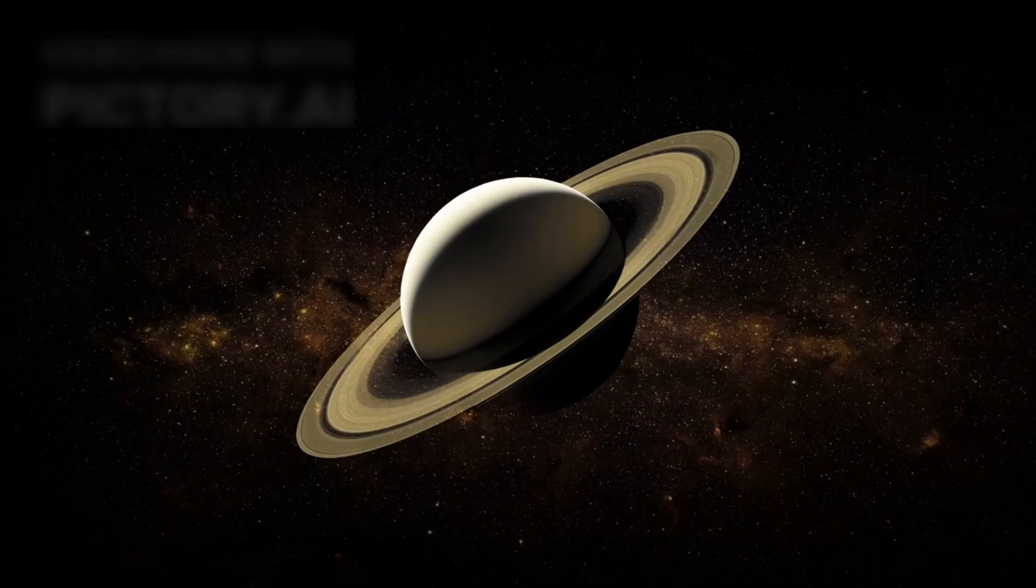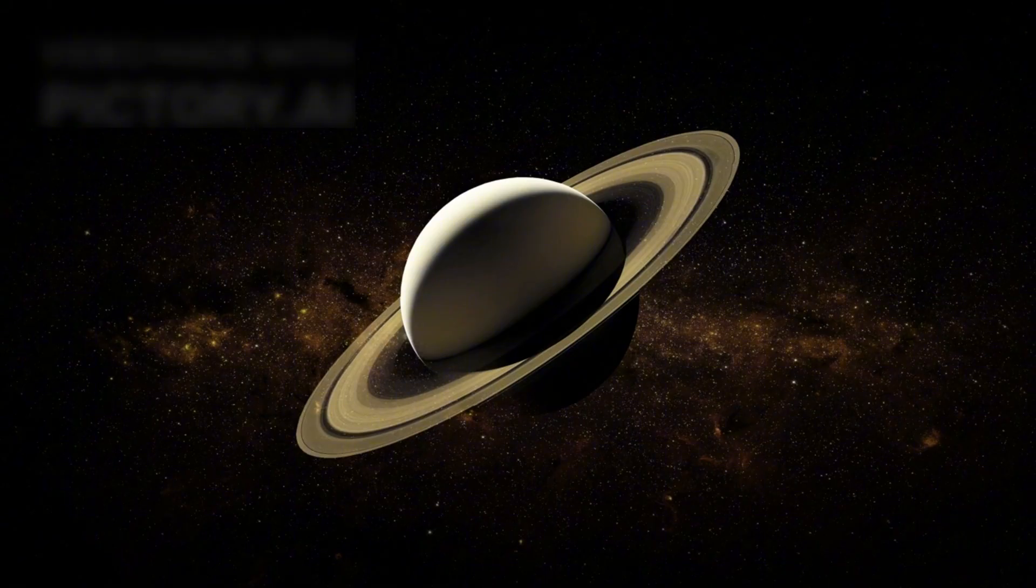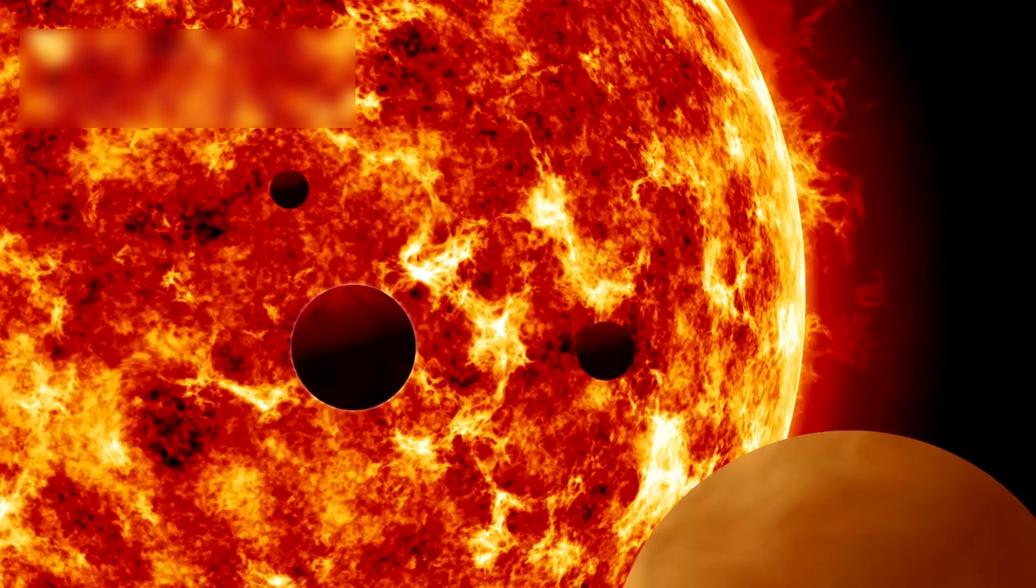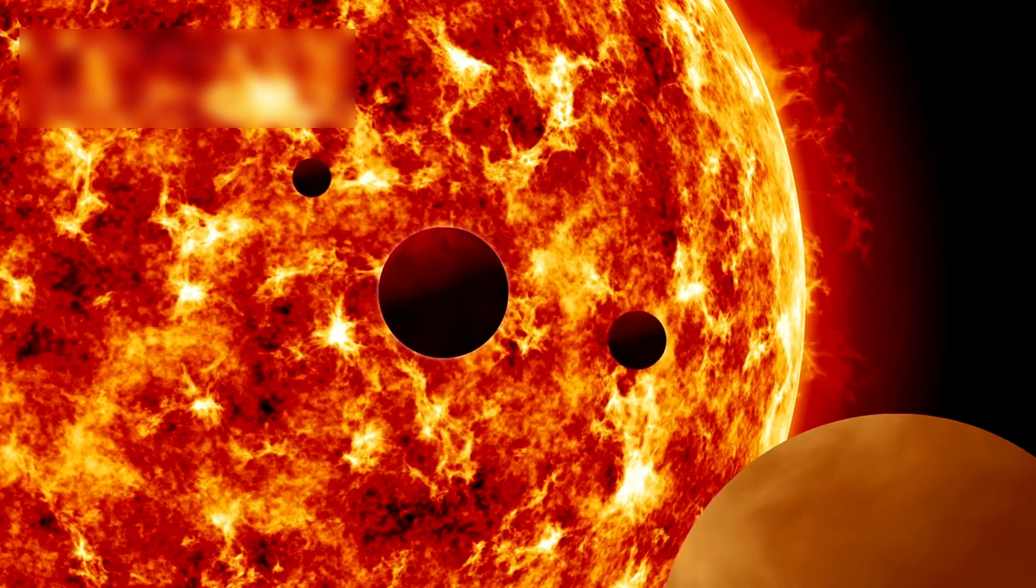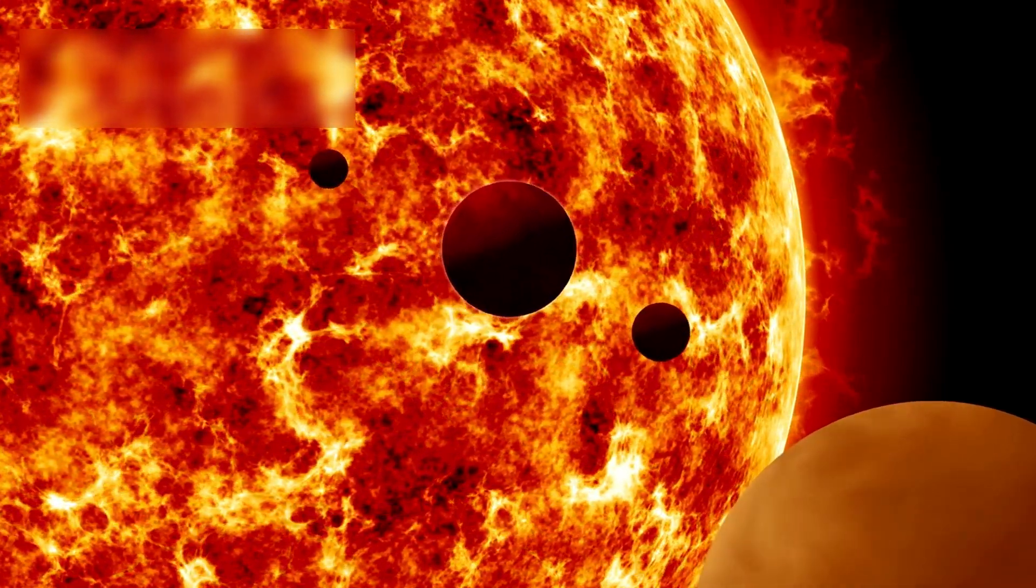At Saturn, it exposed the complexity of the planet's rings and hinted at hidden oceans beneath the icy crusts of moons like Europa and Enceladus. These discoveries reshaped planetary science and laid the foundation for future missions.